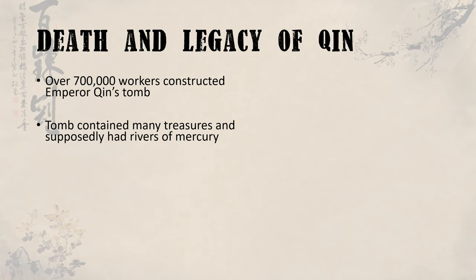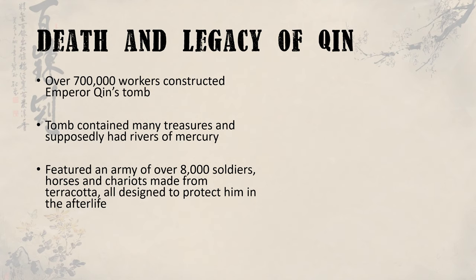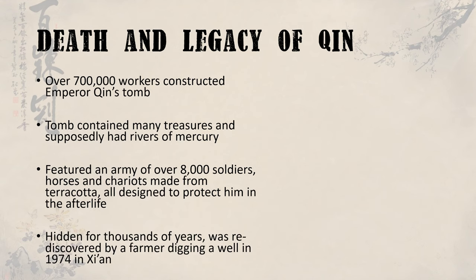Most famously, however, are the terracotta warriors that were found in the tomb. Over 8,000 statues were found in the tomb complex, all handmade and painted, all with different facial features, hairstyles and weapons. There were also archers, horses and chariots found. It is believed that this terracotta army was created and placed in the tomb to protect Emperor Qin and to serve as his army in the afterlife. Much of this tomb has not yet been excavated or opened up, so we are still not really sure what other treasures might be inside.